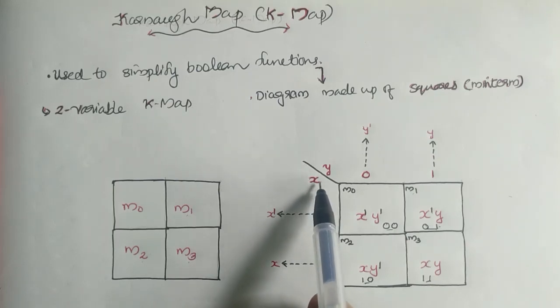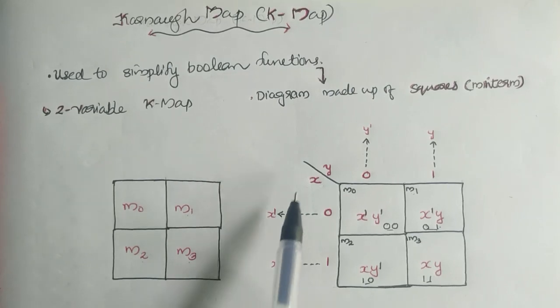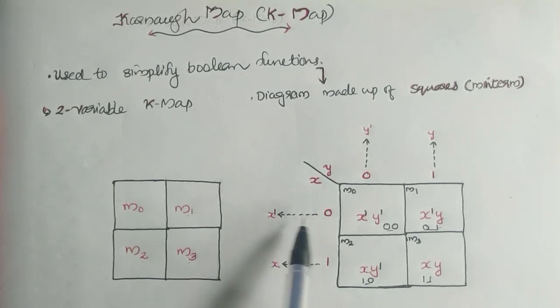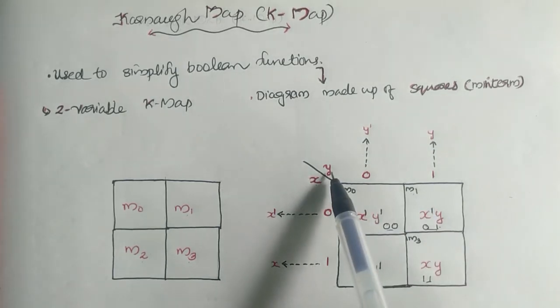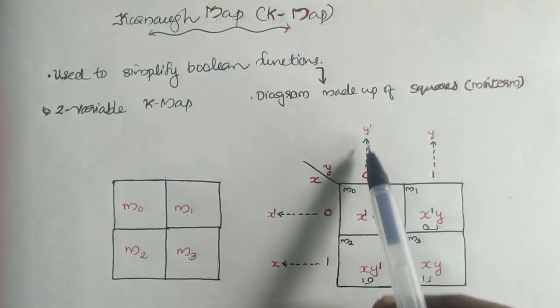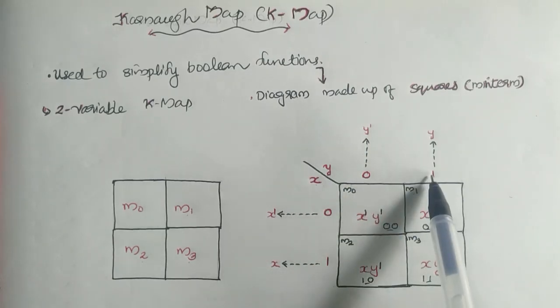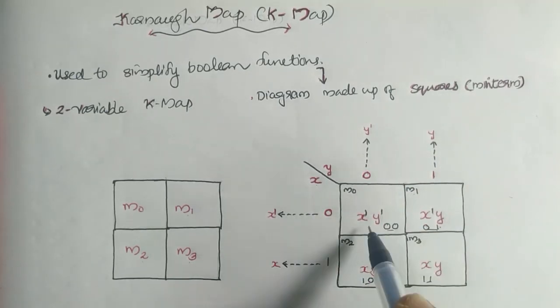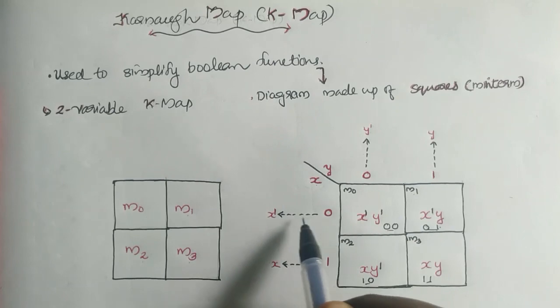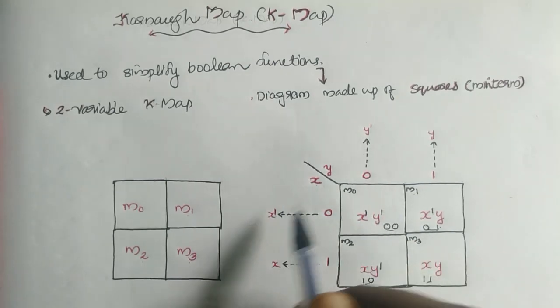Say we have variables X and Y. When X holds the value 0, we represent it as X bar. When X holds the value 1, we represent it as X. When Y equals 0, we represent it as Y bar, and when Y is 1, we represent it as Y. So you can have the first element as 0,0 or X bar, Y bar.